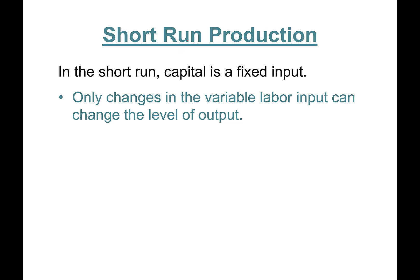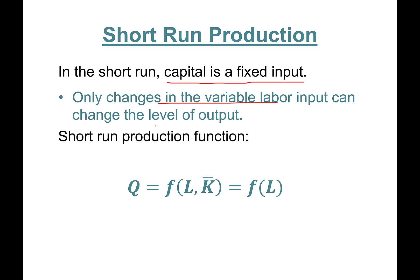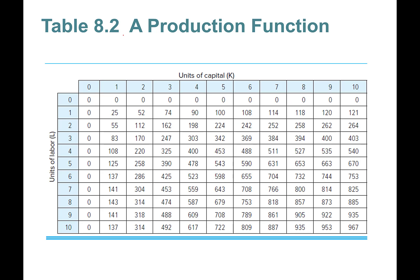In the short run, capital is the fixed input only. Changes in the variable input — labor — can change the level of output. The short-run production function shows that total quantity produced is a function of labor and capital. Because capital is fixed, short-run production only depends on labor with fixed capital.